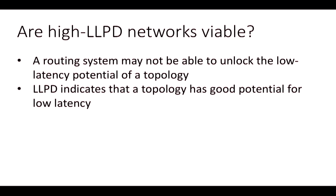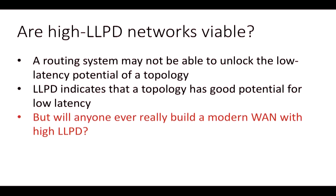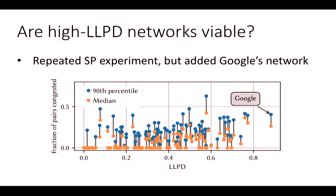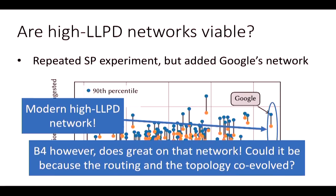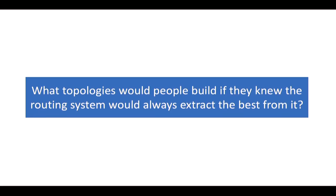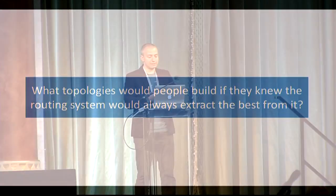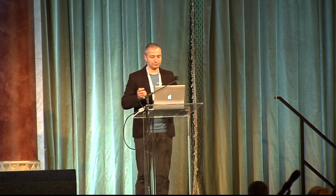The big question is: at the beginning of this talk, I showed that a routing system may not be able to unlock the low latency potential of a topology. We also had the LLPD metric indicating topologies with good potential. Will anyone build modern wide-area networks with high LLPD? Sure—you just saw one in the last talk. We repeated the shortest path routing experiment and added Google's B4 network—it turns out to have the highest LLPD of all networks in our dataset. Interestingly, B4 the routing algorithm does great on B4 the network, possibly because the routing algorithm and topology co-evolved. In general, what topologies would people build if they knew the routing system would always extract the best from the topology?